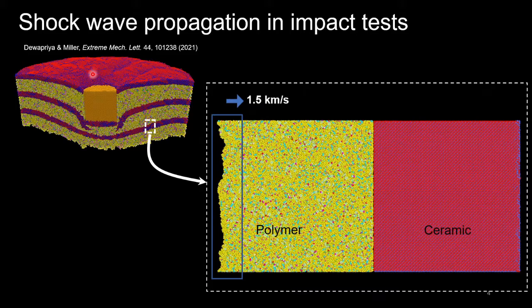Then we wanted to study the shock wave propagation explicitly at the nanoscale. For that kind of study, a sample like this is very convenient to use. We can use the periodic boundary conditions, and then we can apply the shock particle velocity to one phase of the sample and observe how the shock propagates and reflects at the interfaces, and study many other interesting phenomena at the nanoscale.